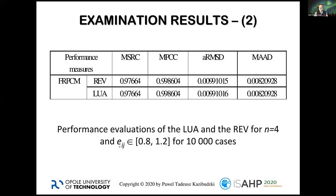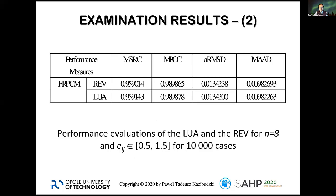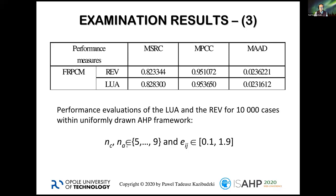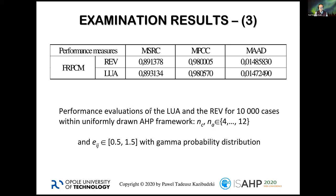For n equal to four, with a perturbation factor from 0.8 to 1.8 for 10,000 cases, the results are very encouraging. I also did this for different intervals of perturbation factors, different numbers of alternatives, and also for the whole AHP framework where the number of criteria and alternatives were drawn from a set of five to nine.